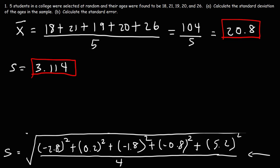Now the formula that we need to calculate the standard error is this. The standard error is going to be the standard deviation of the sample divided by the square root of n. So S, we know it's 3.114. The sample size is 5. There's 5 ages in this sample.